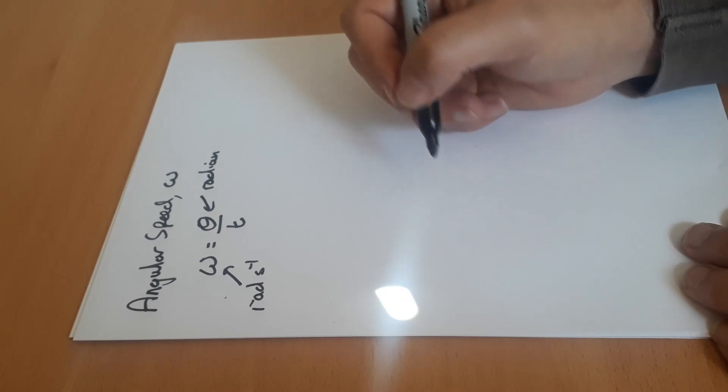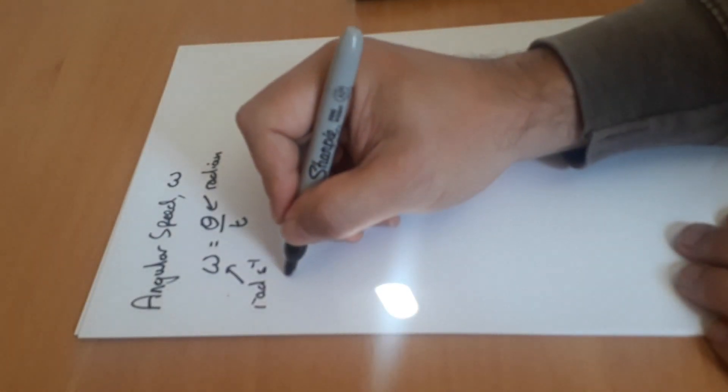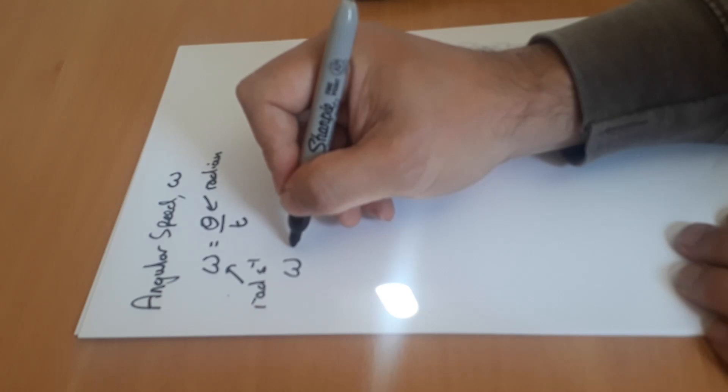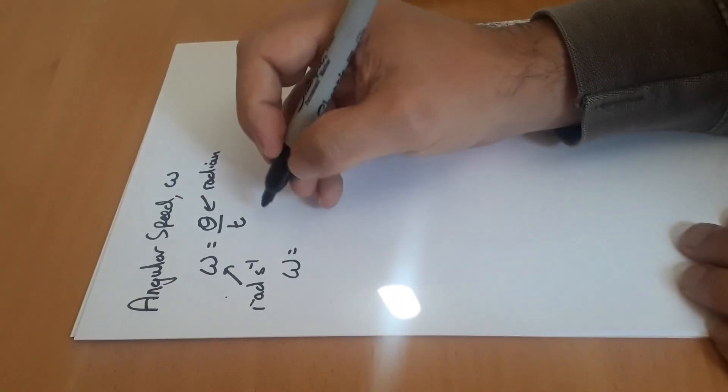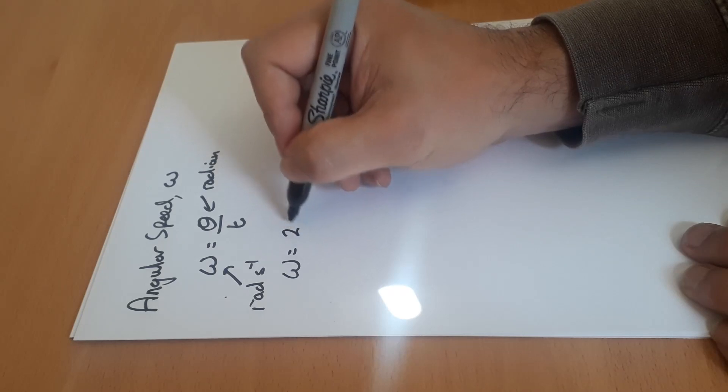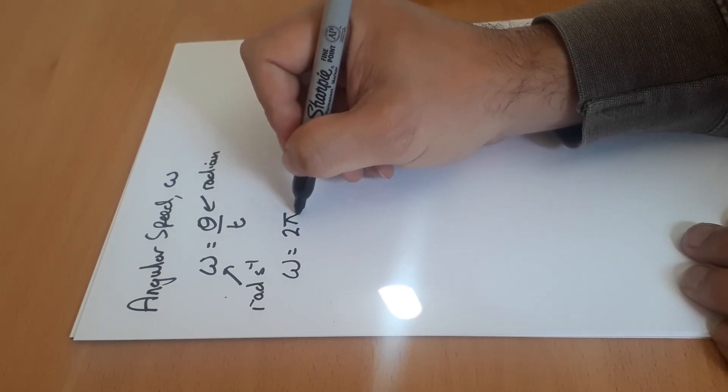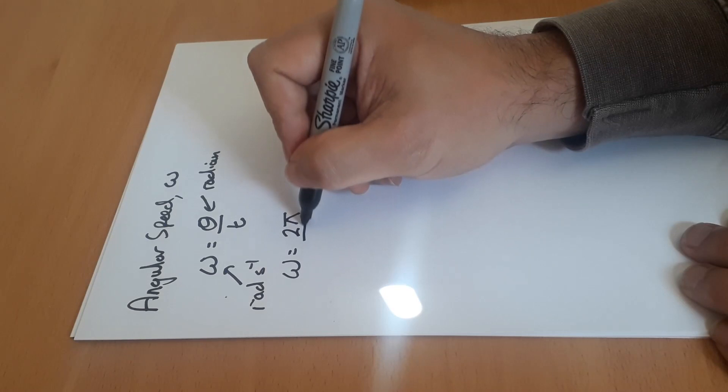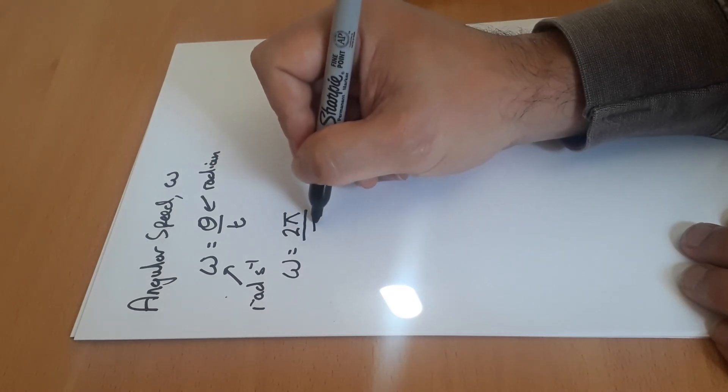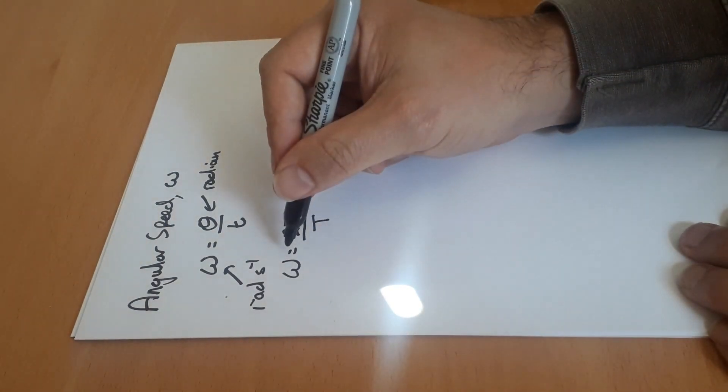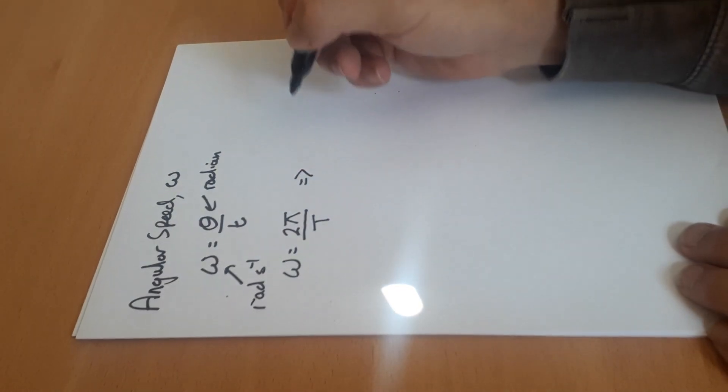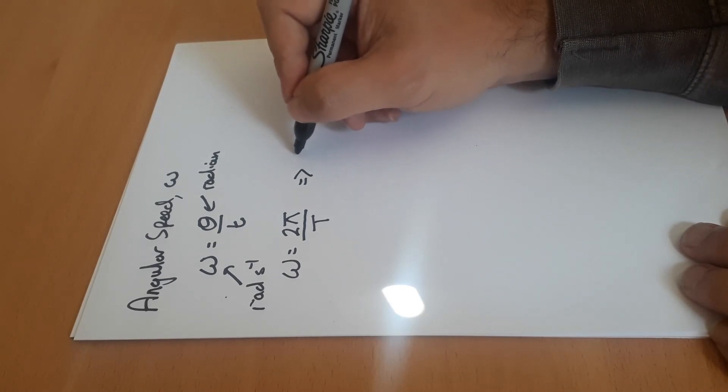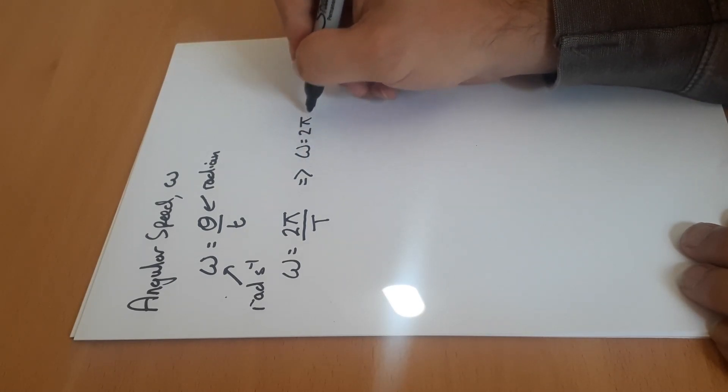Now if we think of a complete circle, our angle if we would move through would be 2π radians, and our time would have been one time period. So our angular speed can be kept from 2π over T, which also means because T is 1 over f, that omega can equal 2πf.